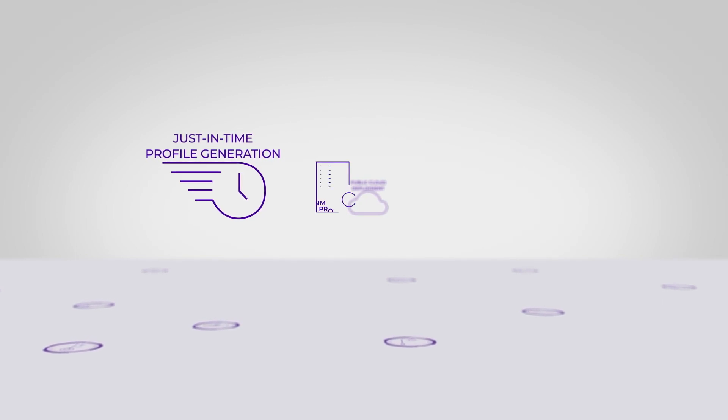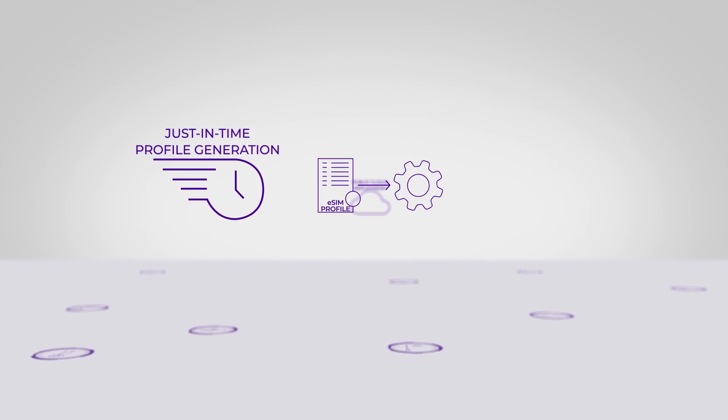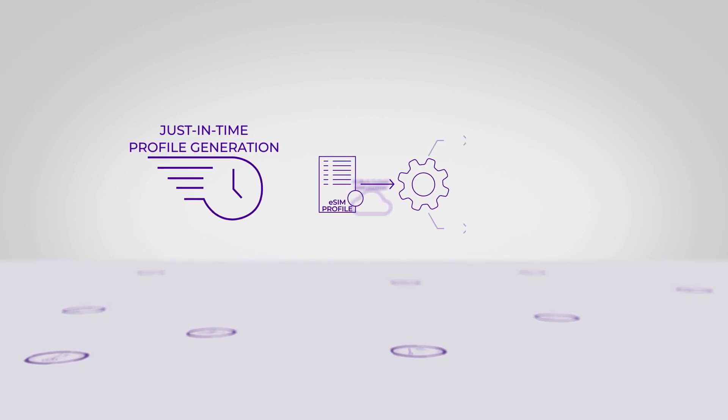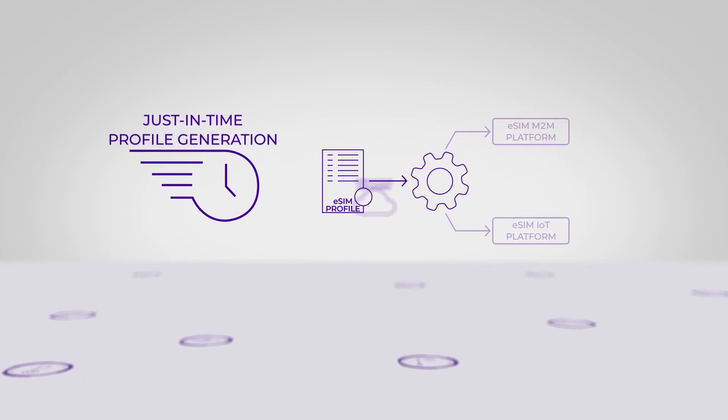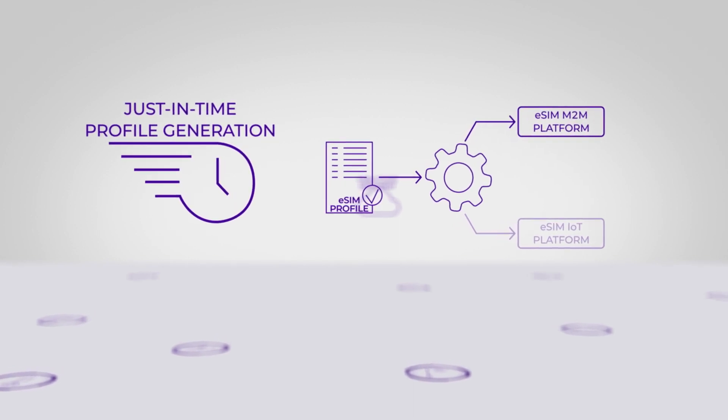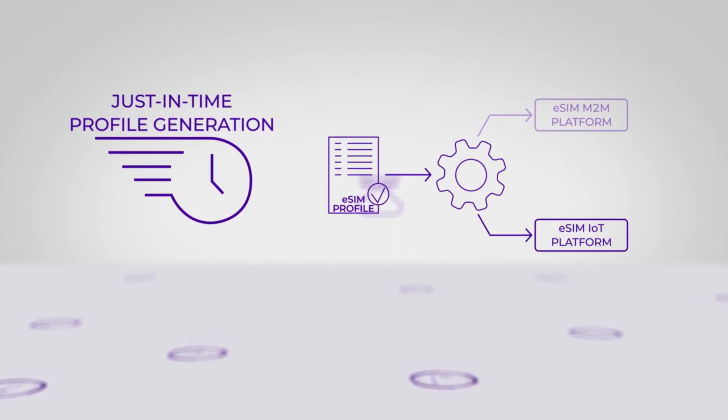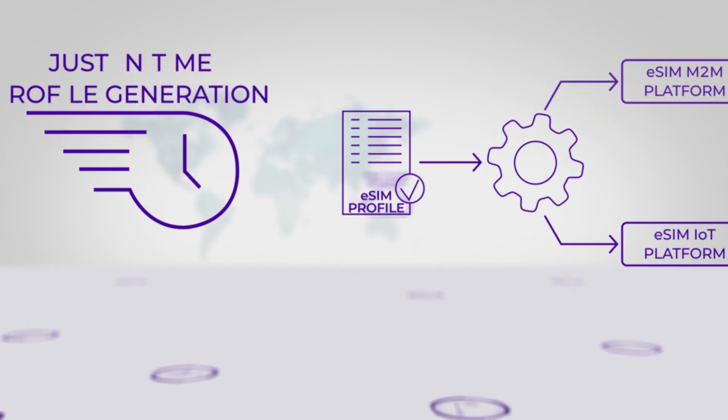Just-in-time profile generation enables mobile operators to have a single eSIM profile ordering mechanism for all devices and EUICCs, regardless of their capabilities. It's only when the device is identified that the profile is made available to the right platform and customized according to the device and EUICC capabilities.